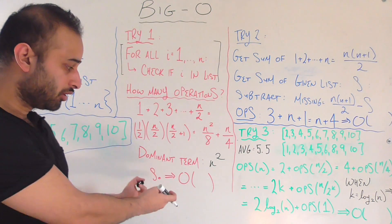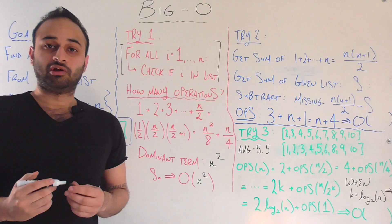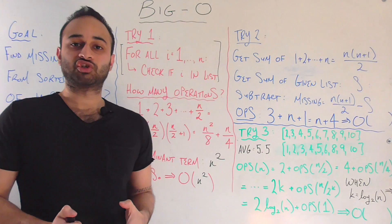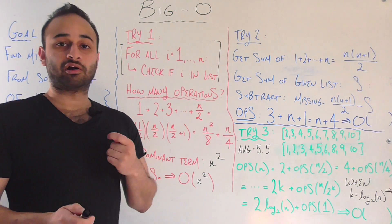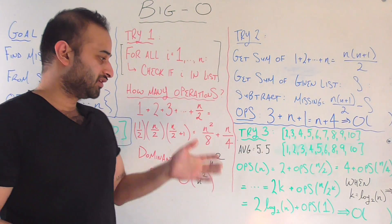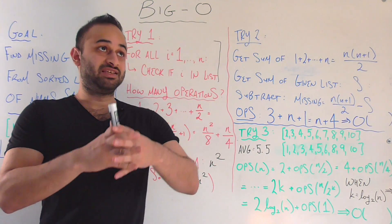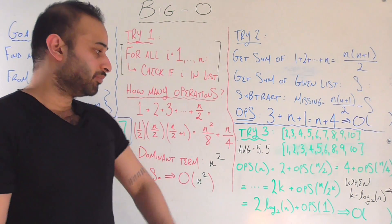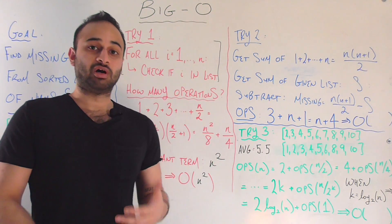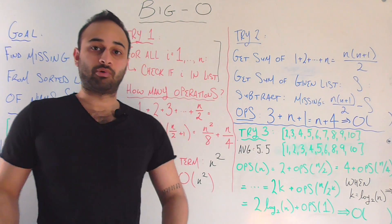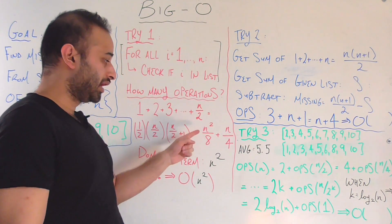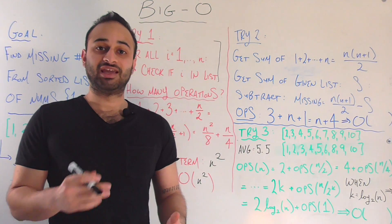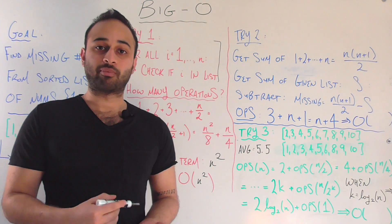A quick thing to note: we don't care about any of the coefficients here — we don't care if it's one fourth or one eighth. Big O notation is only concerned with the overall characteristic growth. The only thing that matters is: as the number of elements doubles or quadruples, what's happening to the number of operations required? Based on this formula, if our number of elements doubles — say from one million to two million — because n squared is the dominant term, a doubling in list size causes a times-four, or quadrupling, of the number of operations.